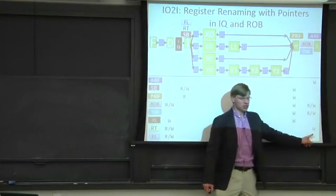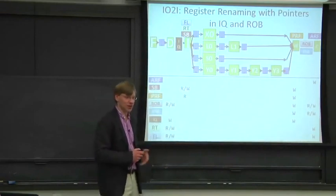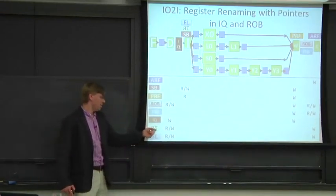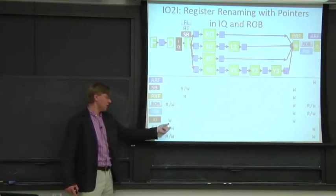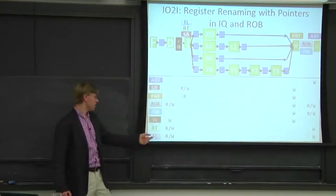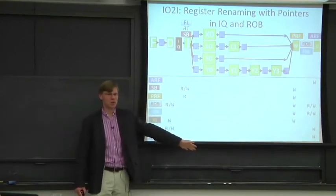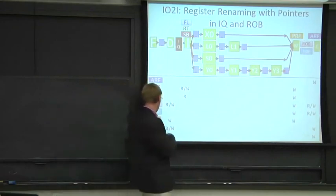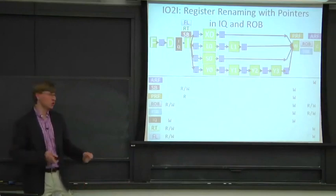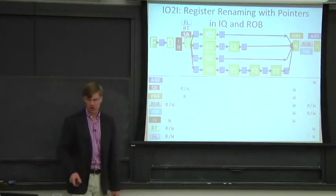The condition for deallocating a physical register gets a little complicated, and we'll talk about that. The rename table gets read up front because that tells you where to actually get the value, and it gets updated when we emit an instruction down the pipe. We also want to update some pending bits at the end of the pipe so it knows whether to pick up from the physical register file or the architectural register file for rollback purposes.